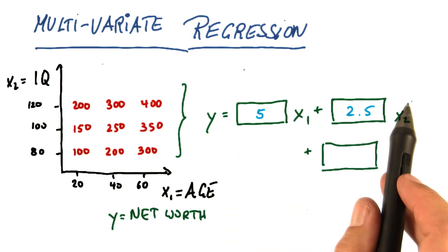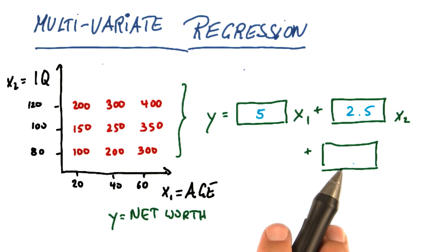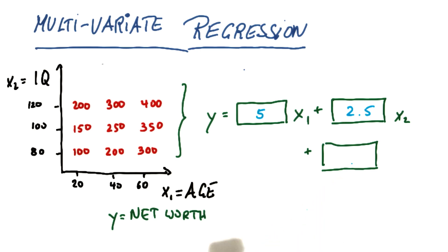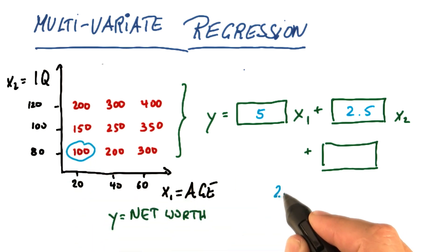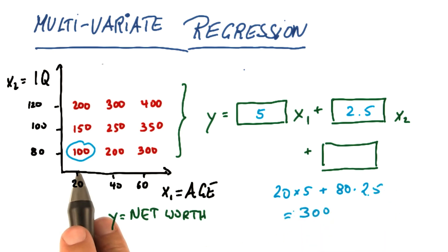Now if we left it at this and this number over here doesn't exist, then what we predict for this value over here is 20 times 5 plus 80 times 2.5 and that is 300. So we have 200 too large,